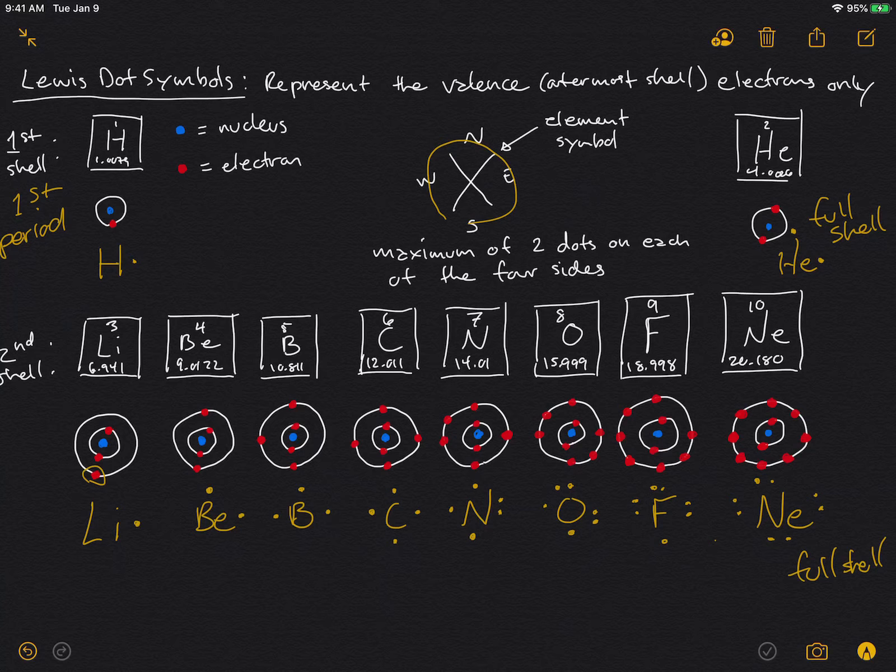And then if you were to look at sodium in the next period, you would see that it's got one valence electron, just like lithium. And then magnesium looks just like beryllium. So we start a new shell, and the Lewis dot symbols look the same. And next we'll learn how to put these together and represent covalent molecules.